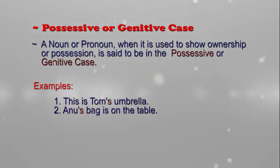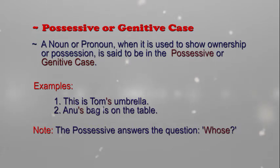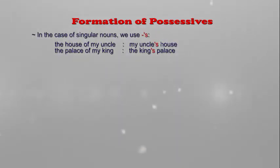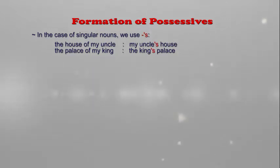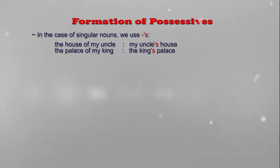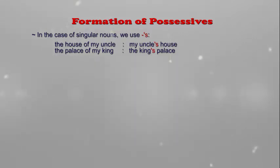Note: the possessive answers the question 'whose'. Formation of possessives: in the case of singular nouns, we use apostrophe s. For example, 'the house of my uncle' — the house belongs to uncle, so in the possessive form you write 'my uncle's house'.